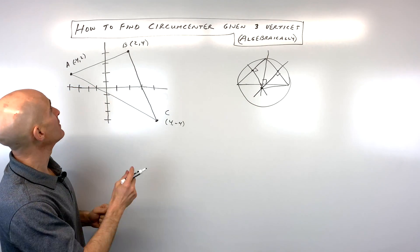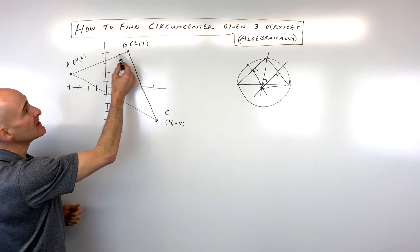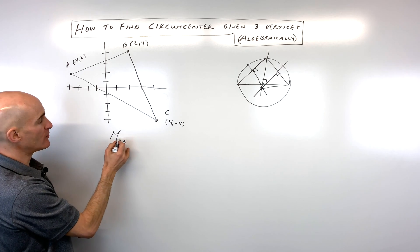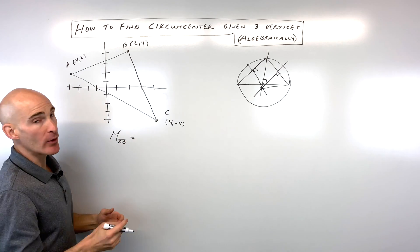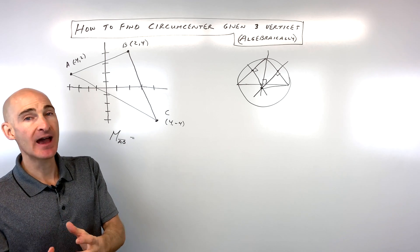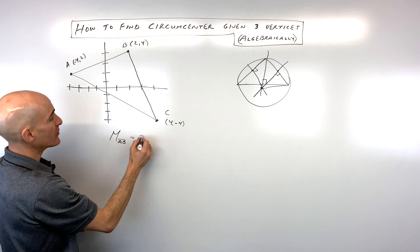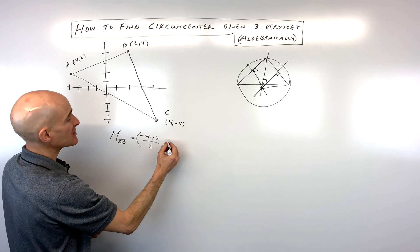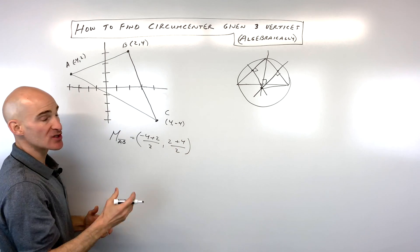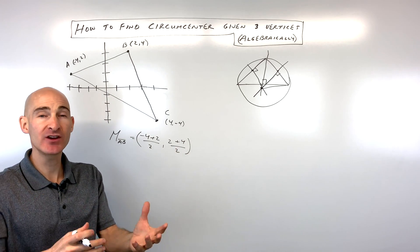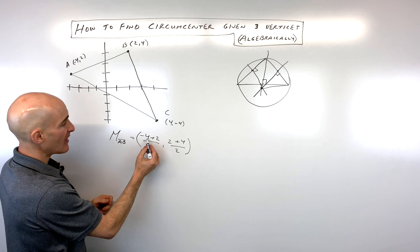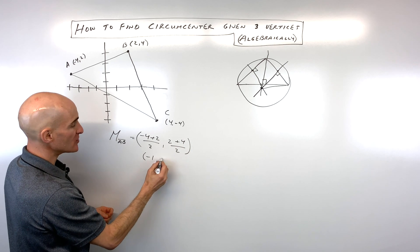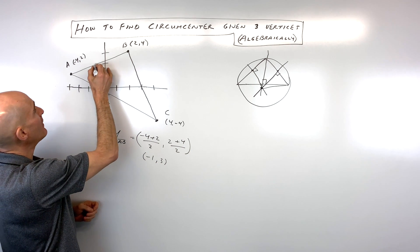So let's go ahead and jump into this example. The first thing I want to do is find the midpoint of side AB. I'll denote that as M sub AB. When you find the midpoint, you want to find the average of the x's and the average of the y's. So we add the x's together — negative four plus two — and divide by two. Same thing with the y coordinates: two plus four, divided by two. So we get negative two divided by two, which is negative one, and six divided by two is three. So the midpoint is at negative one, positive three.